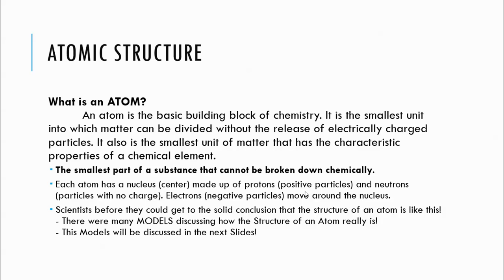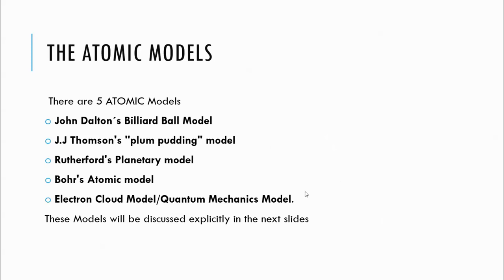Before scientists reached the solid conclusion that the structure of the atom is as we know it today, there were many models. There are five atomic models: John Dalton's billiard ball model, Thomson's plum pudding model, Rutherford's planetary model, Bohr's atomic model, and the electron cloud or quantum mechanical model.